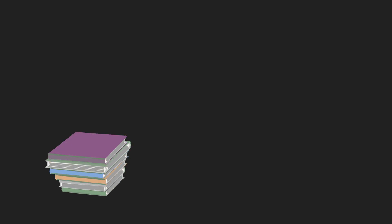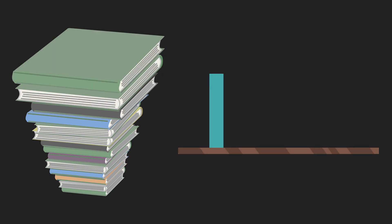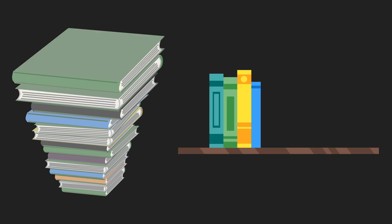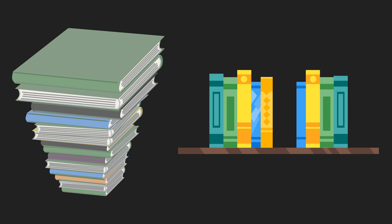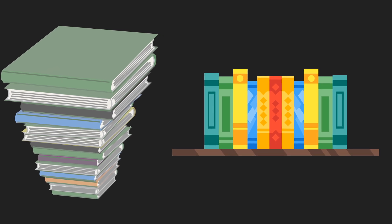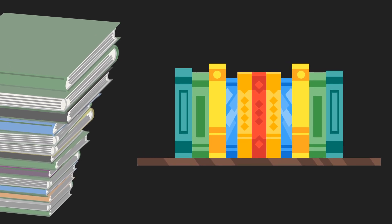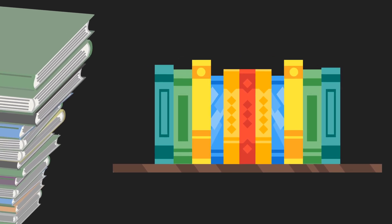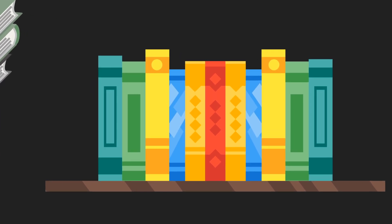Let's imagine you have a pile of books and you want to organize them alphabetically. You can pick up the top book from the pile and put it on the shelf, then pick up the next one and decide if you have to put it before the first book or after. Every time you can pick up one book and put it in the correct place among the books on the shelf, and continue until no books remain in the pile. This is called insertion sort.